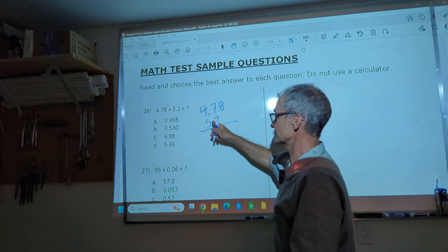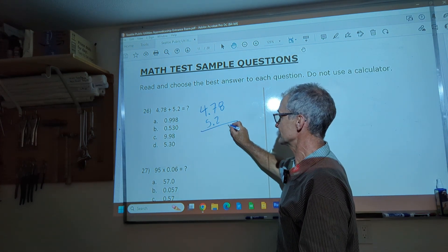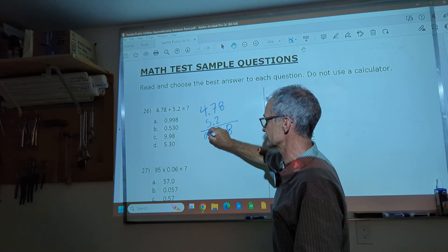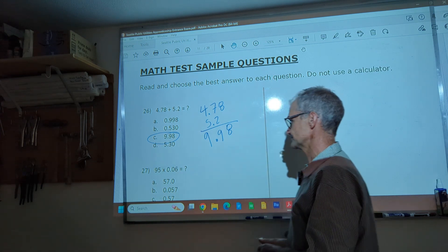However, just to show you the rule of adding decimals, I line them up. I get eight. Add down nine. Decimal place stays there. Four and five is nine. 9.98.